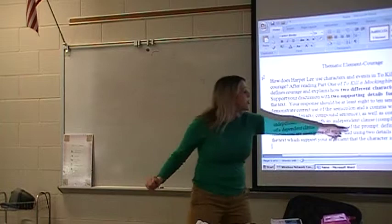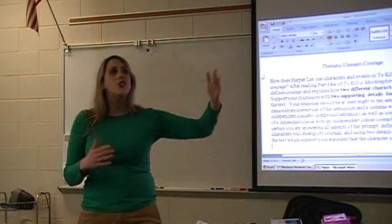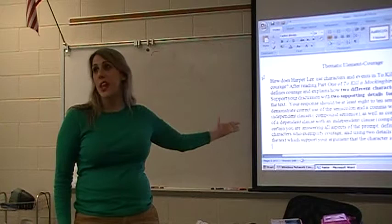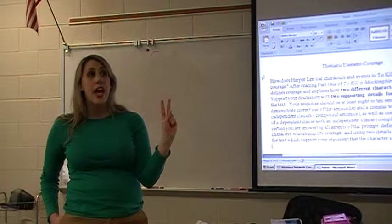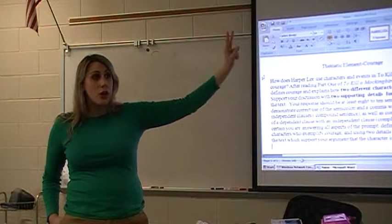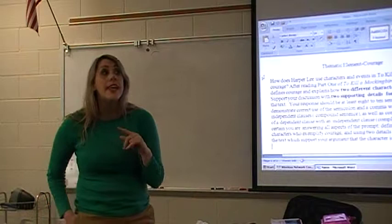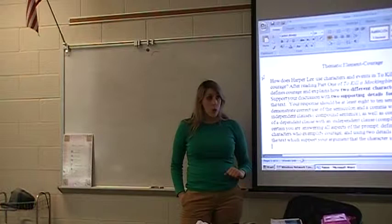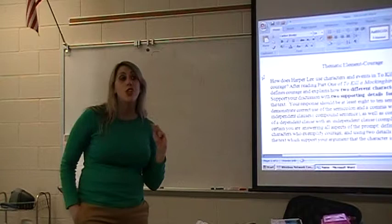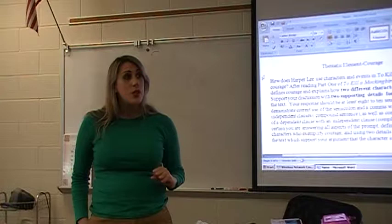You're familiar with that from the benchmarks — you always had to use two supporting details from the reading selection. So, two details from the text for one character showing how they exemplify courage, and two details for another character. You also need to correctly use the semicolon in one sentence, the comma and conjunction correctly, and correctly punctuate a dependent clause with an independent clause.